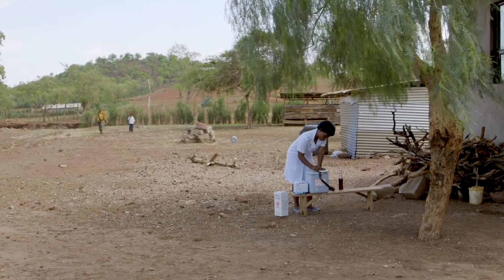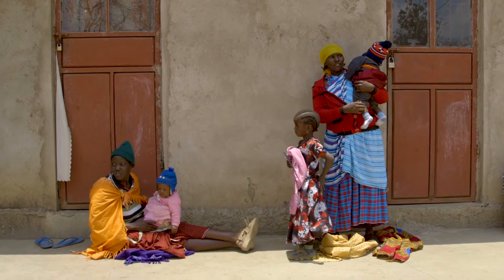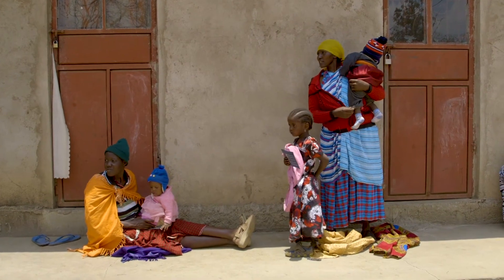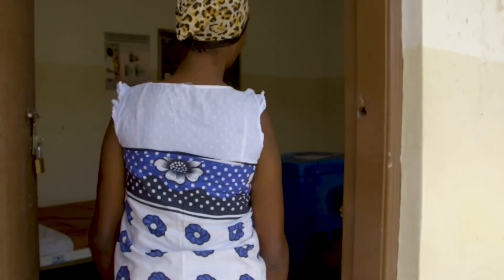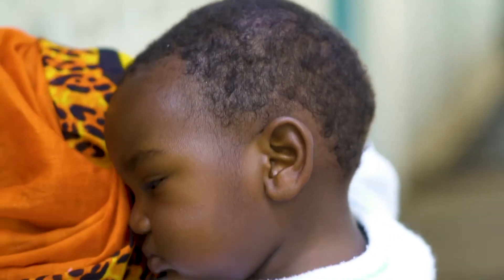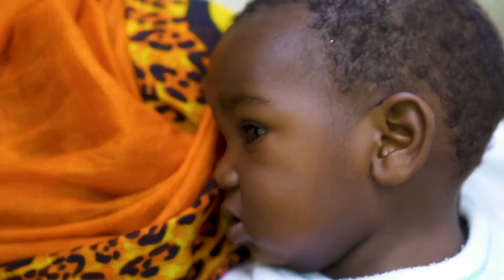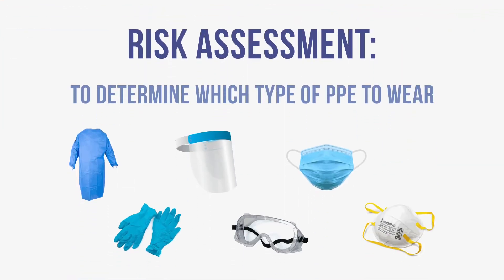During the COVID-19 outbreak, as part of IPC measures, health workers must evaluate each interaction with their patients and assess the risk of exposure to and contact with any bodily fluids, such as blood or respiratory droplets, and or open skin. Based on this process, called a risk assessment, health workers will determine which type of personal protective equipment, or PPE, to wear for adequate protection during each interaction with a patient.